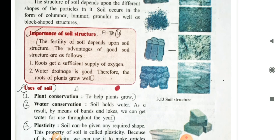The fertility of the soil depends upon the soil structure. The advantages of good soil structure are as follows. Roots get a sufficient supply of oxygen. Water drainage is good. Therefore, the roots of plants grow well.